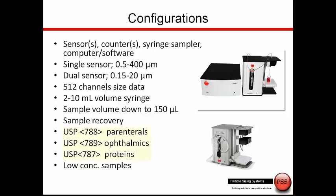This is the ideal system for many USP tests, including 788 for parenterals, 789 for ophthalmics, and 787 for therapeutic proteins. This instrument can also be used as a general particle size analyzer for low concentration samples that do not require dilution.